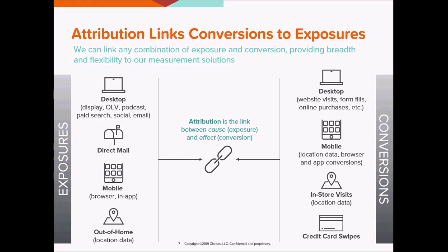With our identity graph, it's also possible to incorporate clients' first-party data, or any data sets that they directly source, as long as those data sets include one of our key consumer identifiers, like postal addresses, emails, mobile ad IDs, or IP addresses. These identifiers, as well as several others, which collectively make up our identity graph, are the backbone of attribution.